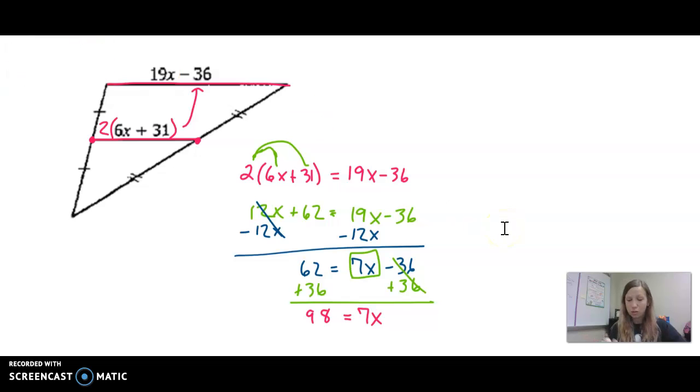So the last step would be to divide both sides by 7 so that x is now isolated. 98 divided by 7 is 14.